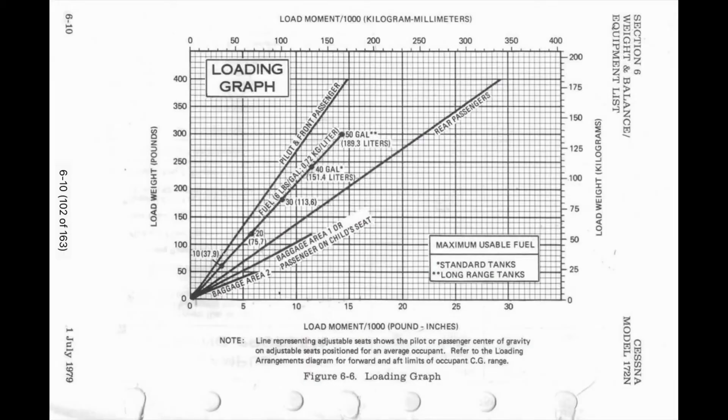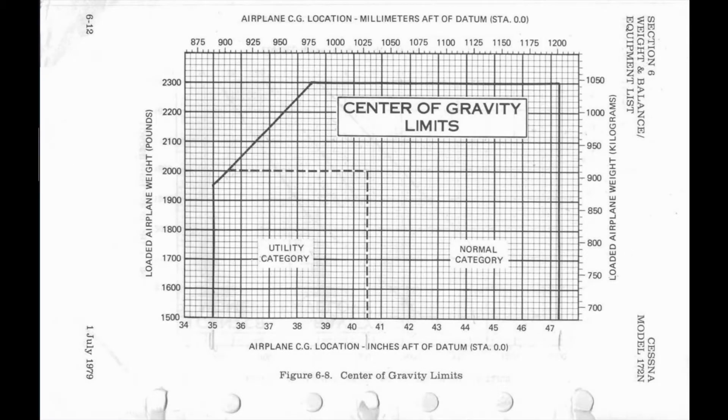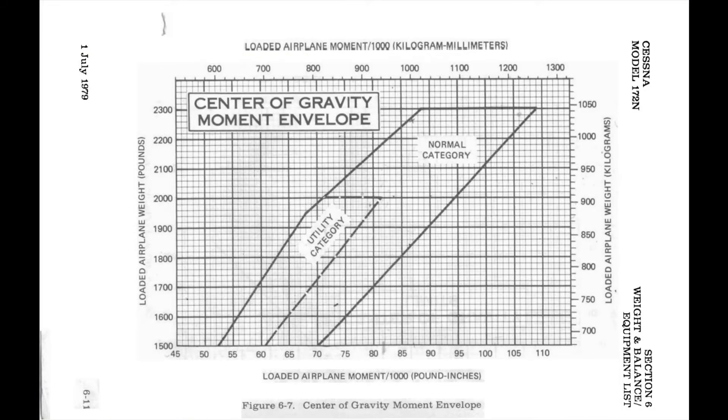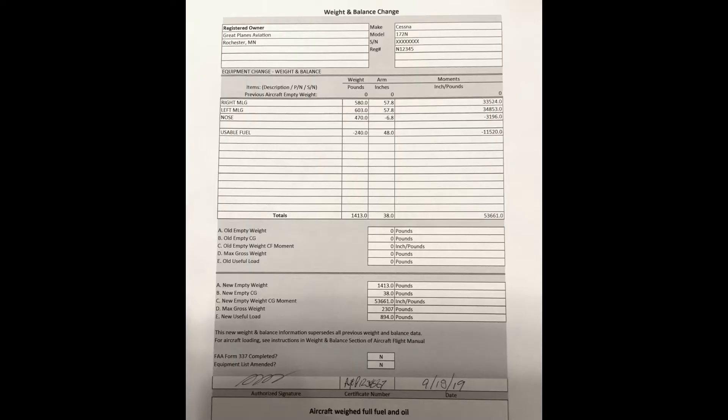Third, the aircraft loading graph. And fourth, the Center of Gravity Limits chart or the Center of Gravity Moment Envelope chart. Both can be found in Chapter 6 of your POH. And last, but certainly not least, you'll need the formal weight and balance document showing the empty aircraft weight and balance, also often kept in Chapter 6 of the POH. A calculator can also be helpful unless you're really good at doing math in your head. And now that we have everything, let's get started.